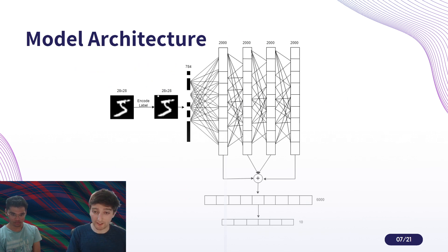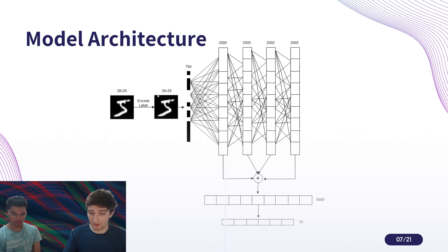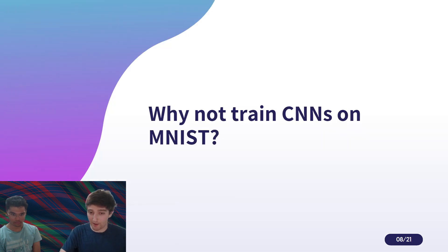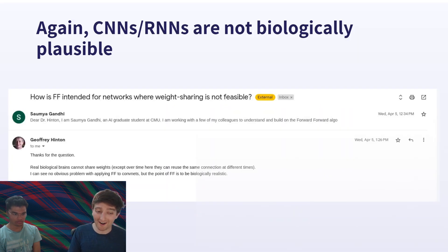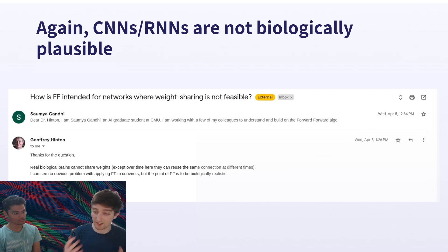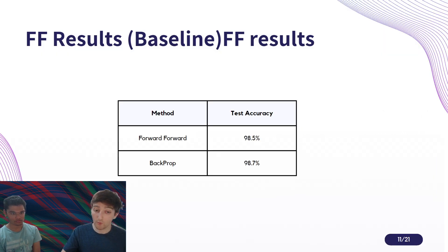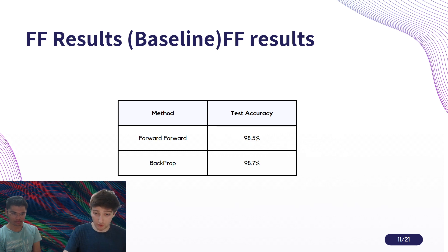This was the architecture that we used — a simple multi-layer perceptron. You might be wondering why we use a perceptron for image classification as opposed to a CNN. The answer came from Hinton himself: CNNs are simply not biologically plausible because weight sharing is not really possible with the way that our neurons work. We were able to pretty much match his baseline and almost achieve the same accuracy with forward-forward as with backpropagation.